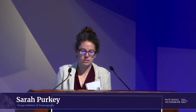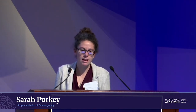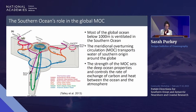To start off, when we're thinking about the role that the Southern Ocean plays, we have to start with this introductory slide looking at the meridional overturning circulation. I like this one by Talley et al. from 2013, which really puts Antarctica in the center, because Antarctica and the Southern Ocean play a really key role in the north-to-south transport of heat and other ocean properties throughout the global ocean.